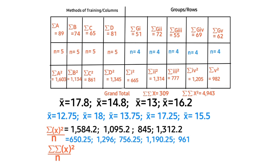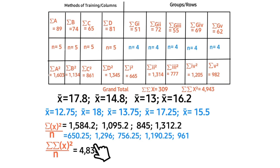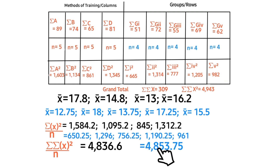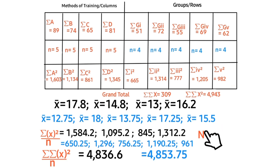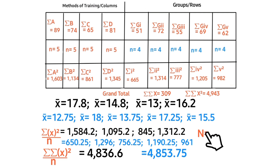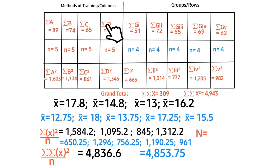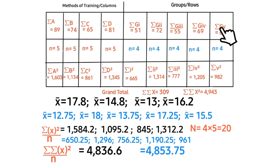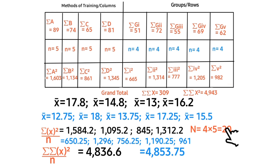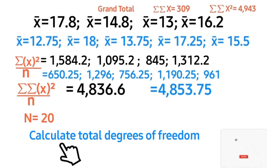Determine the grand total for each set, represented with the summation symbol. The grand total for all methods is the sum of all method squared-and-divided values. The grand total for the groups is the sum of all group squared-and-divided values. Calculate total observations, represented by N. We have four methods times five groups: 4 times 5 equals 20, so total observations N equals 20.